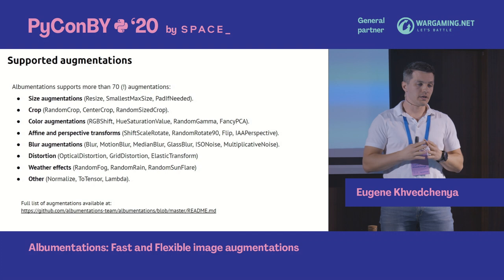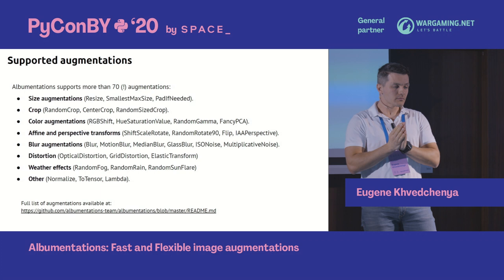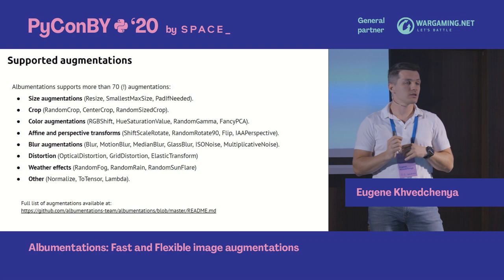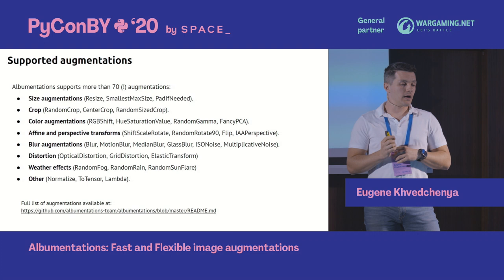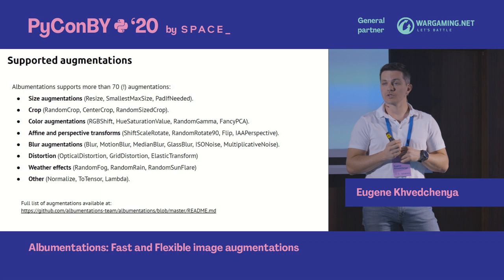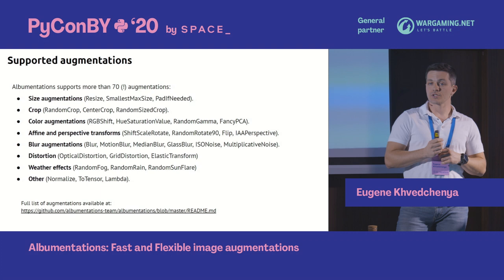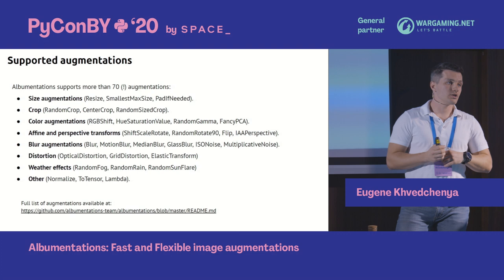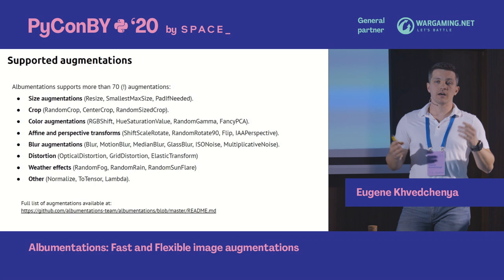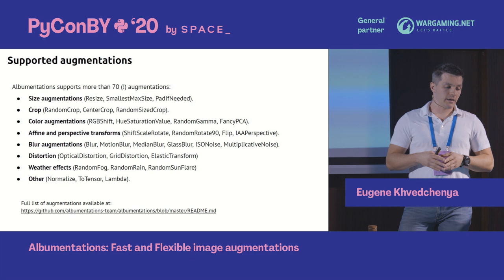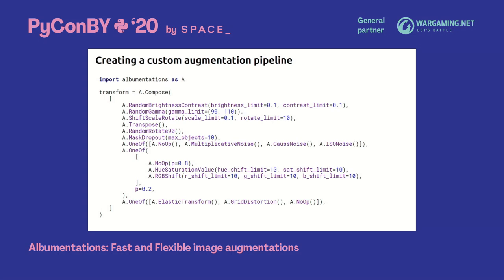To recap, we have more than 70 augmentations including: size augmentations and cropping; color augmentations in different color spaces; affine and perspective transforms; blurring including Gaussian blur and motion blur; noise for different models like simulating camera sensor noise or Gaussian noise; optical distortions to simulate different camera lenses; generation of random weather effects (really useful for self-driving training); and other utilities like image normalization and tensor conversion.